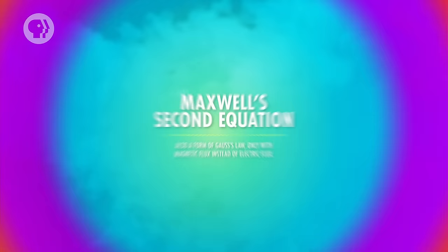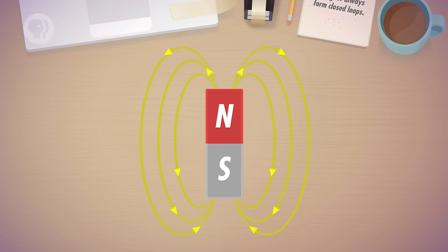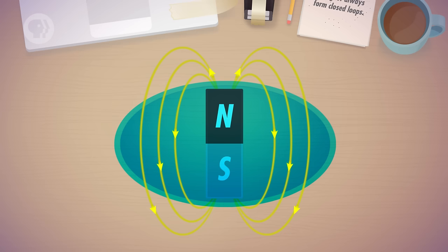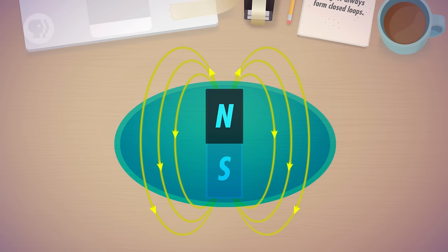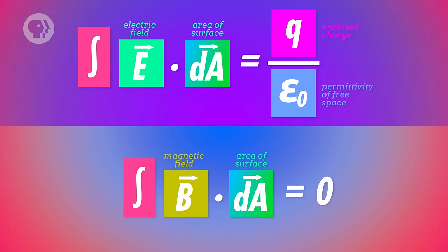If the electric field is constant over the surface, then the left side of the equation becomes E times A. Maxwell's second equation is also a form of Gauss's law, only with magnetic flux instead of electric flux. Magnetic sources are always dipoles with a north and south pole, and magnetic field lines leave from the north pole and return back to the south. The field lines that leave the surface out of the north pole must enter back through the surface to reach the south pole, resulting in the overall magnetic flux being zero. The integral of the magnetic field over the surface area will always equal zero for a closed surface.